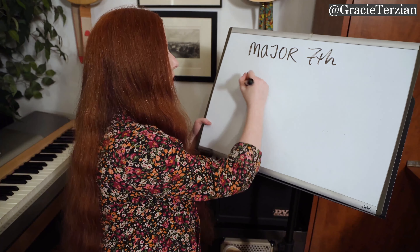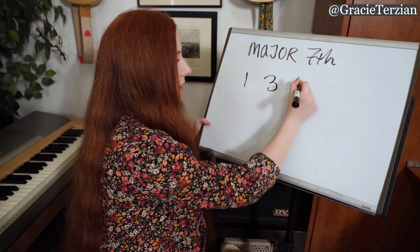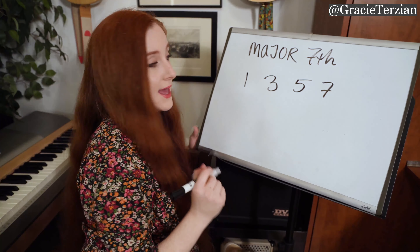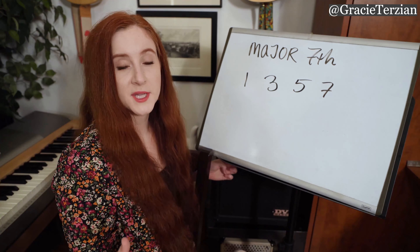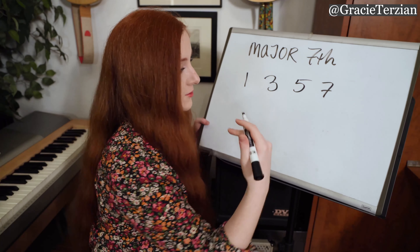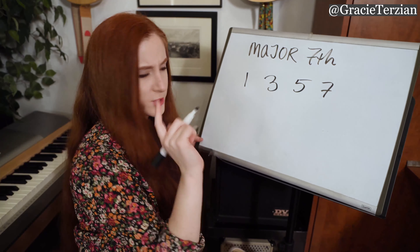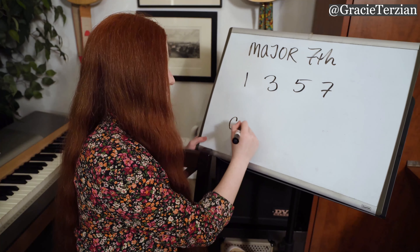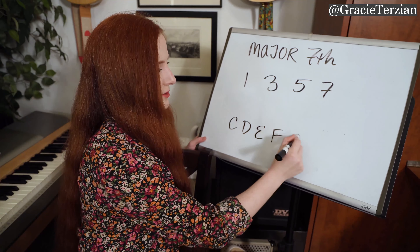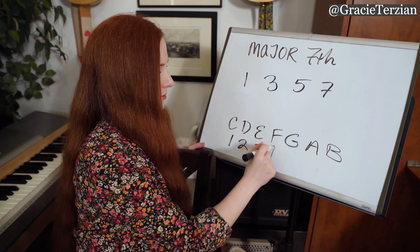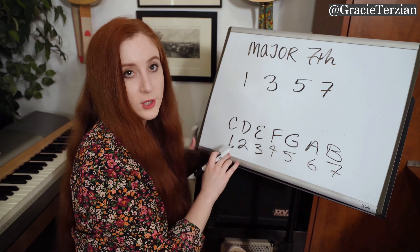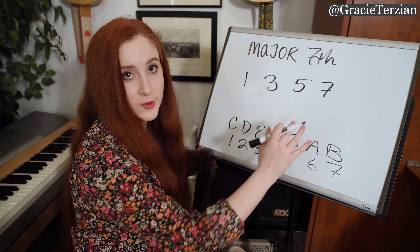First we're going to look at major 7th chords. If you remember, the formula for a major 7th chord is 1, 3, 5, and 7. What that means exactly is, let's say we're working in the key of C major. I want to know what a C major 7 chord is, so I'm going to think about my C major scale: C, D, E, F, G, A, and B. If I number this scale, I'm just going to plug in the notes from the major scale into this formula.